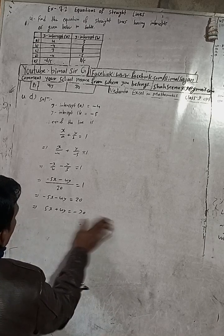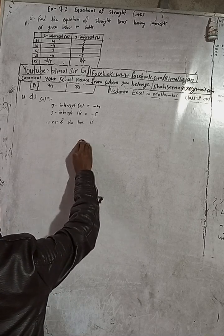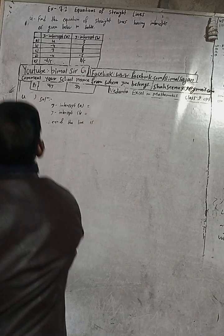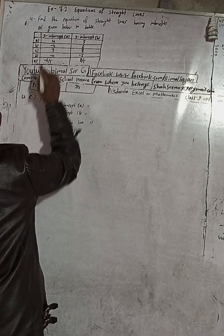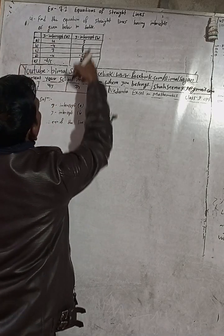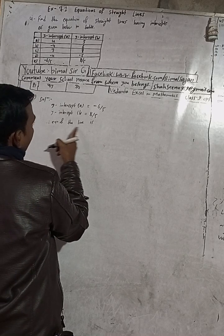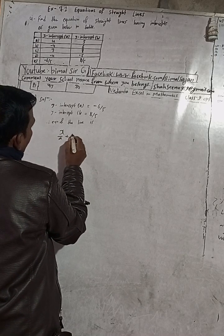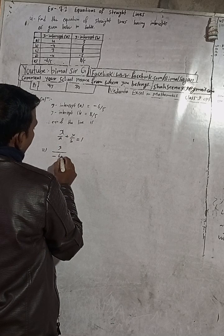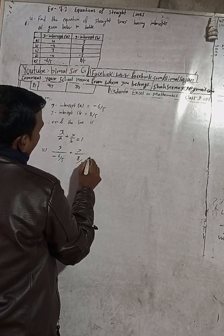Now part E. For E, x-intercept A is minus 6/5 and y-intercept B is 8/5. The equation of the line is x/a + y/b = 1. Substituting: x/(−6/5) + y/(8/5) = 1. Taking the 5 out: minus 5x/6 + 5y/8 = 1.